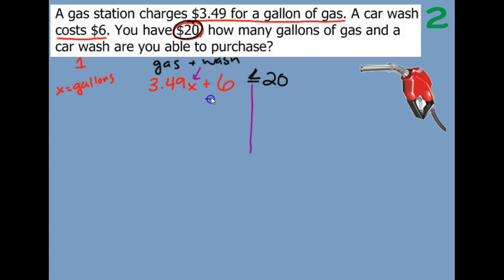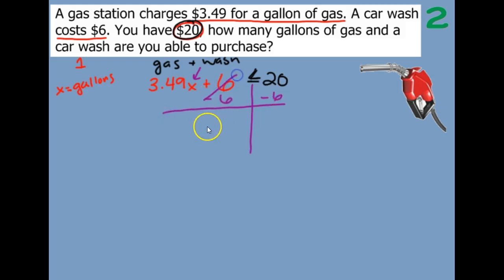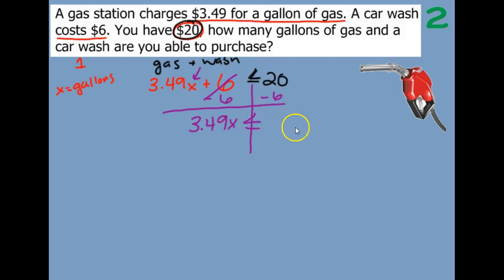To get rid of this 6, I would have to subtract 6. Those eliminate. I have 3.49x is less than or equal to, and then 20 minus 6 gives me 14.